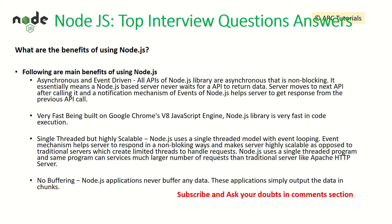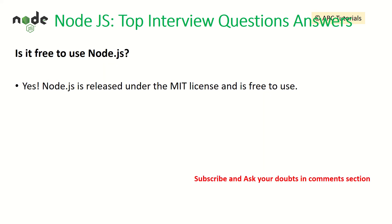The event mechanism helps the server respond in non-blocking ways and makes the server highly scalable. Node.js uses a single-threaded program and the same program can service a much larger number of requests than traditional servers. There is no buffering with Node.js, so data is sent as chunks and may not be sent in one go — which is where observables come into the picture. This question checks whether you truly understand and have used Node.js.